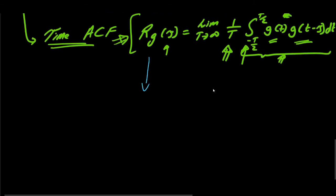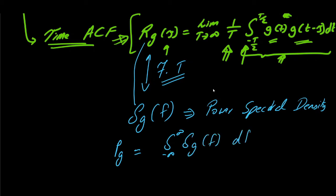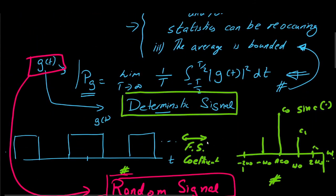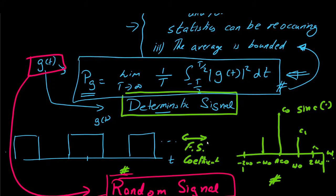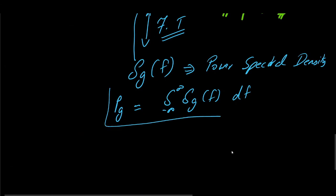Now, if we take the Fourier transform of this expression, we have Sg of f, which is nothing but the power spectral density. That is, we can find the power of a signal, that is Pg, which is simply integral from minus infinity to infinity, Sg of f df. And we have already mentioned that we can also find the power of a signal in time domain by this expression as well. But for this expression, we needed a deterministic signal. And right now, we have a random signal. But still, we are able to find the power.